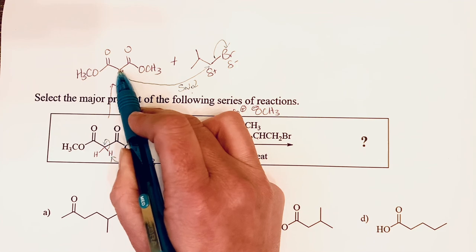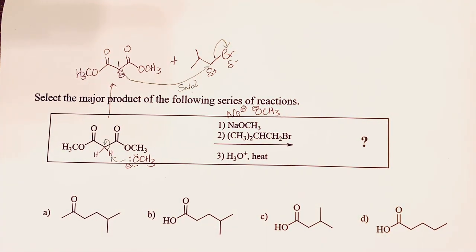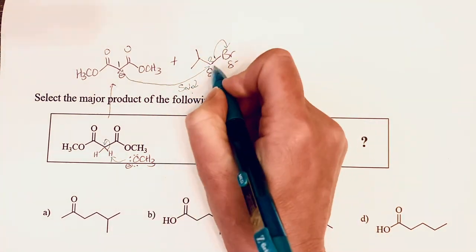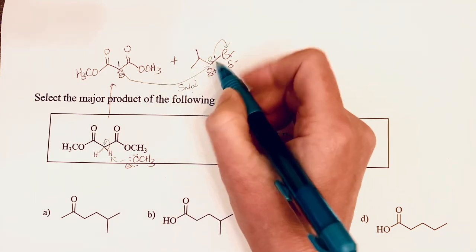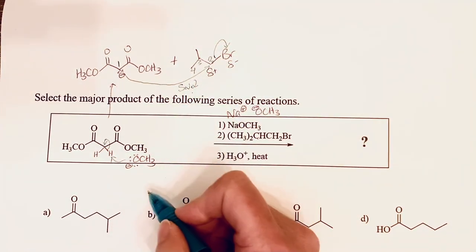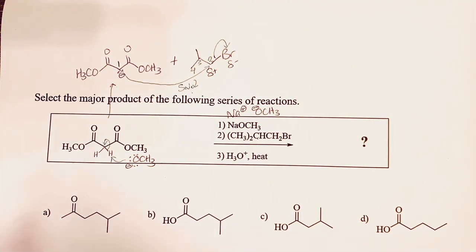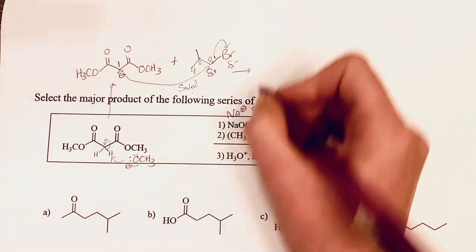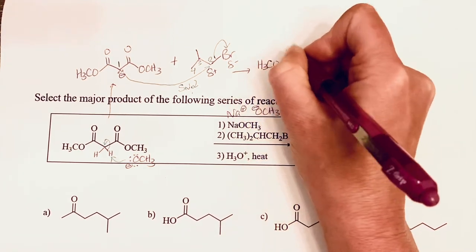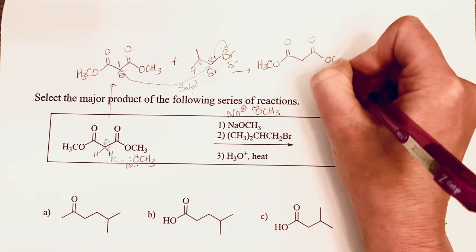We have formed a new bond via this SN2 reaction between this carbon and this one. I'm going to number to keep track of my carbons, so I'm gonna put a number one right there, and then see how many carbons I have added: one, two, three, and four. I'm not ignoring that methyl group when I draw the product; I'm gonna make sure that I have that methyl group still on carbon number three.